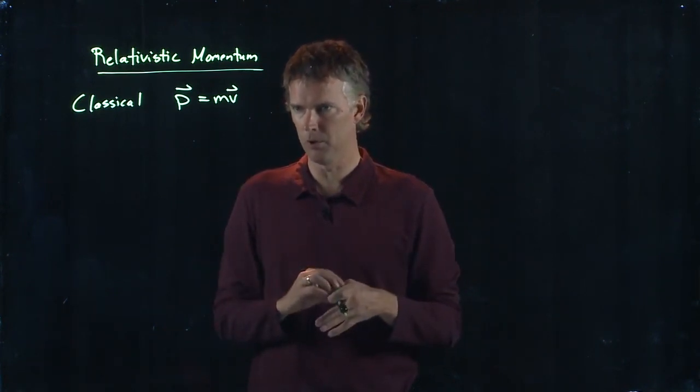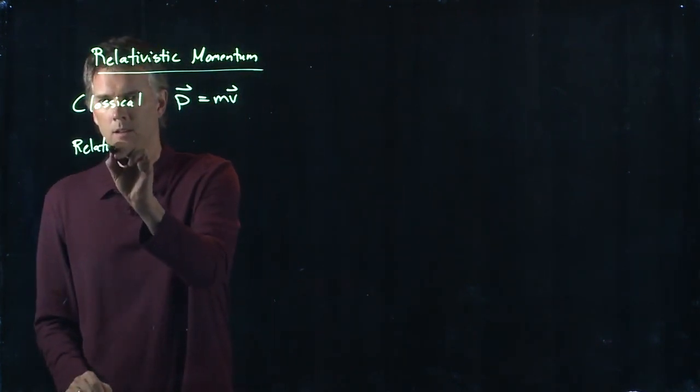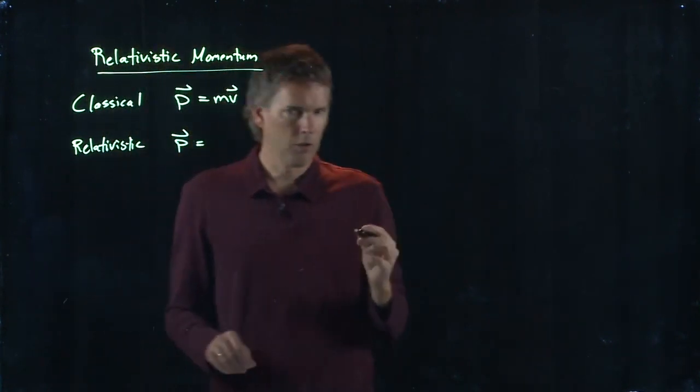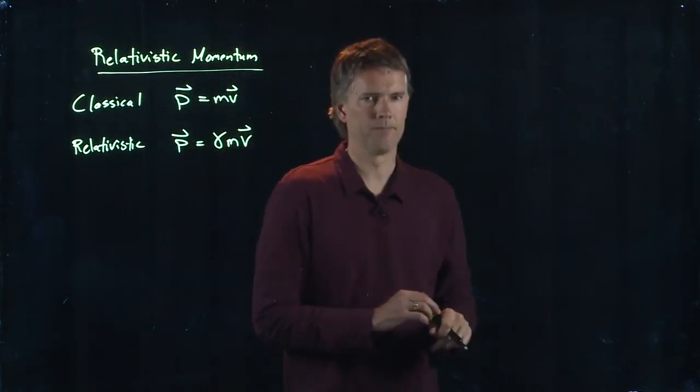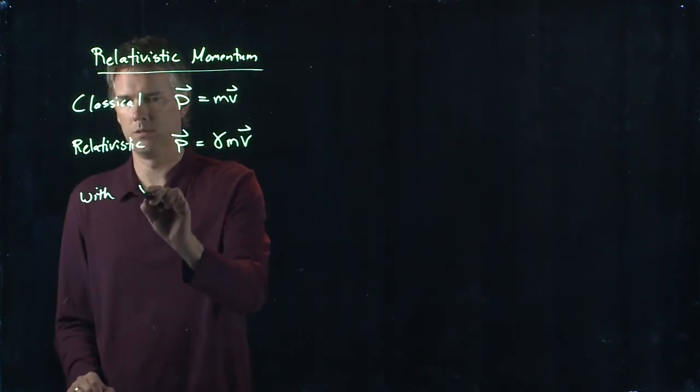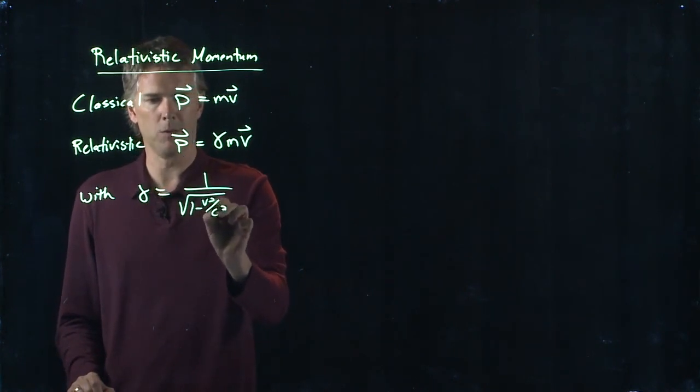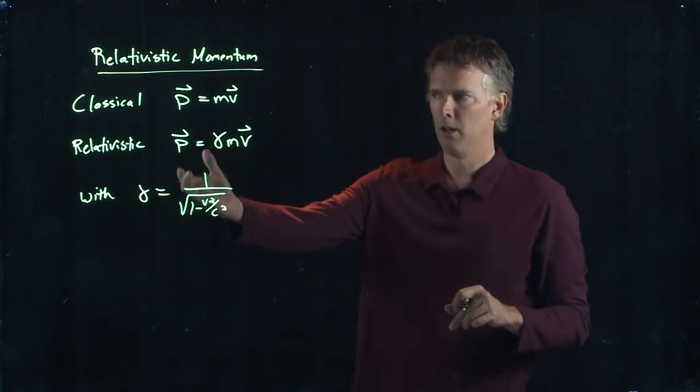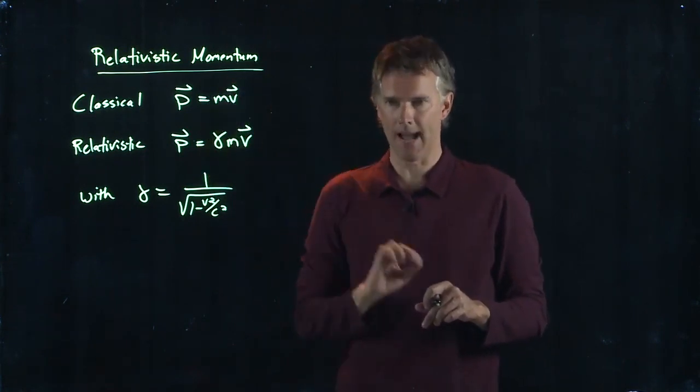Something bad happens when you do that. So we need the relativistic version of momentum, which looks almost the same, except we're going to stick a gamma right in front of it. And again, gamma is equal to one over the square root, one minus v squared over c squared. It's a number bigger than one. So relativistic momentum has more momentum in it than classical momentum.